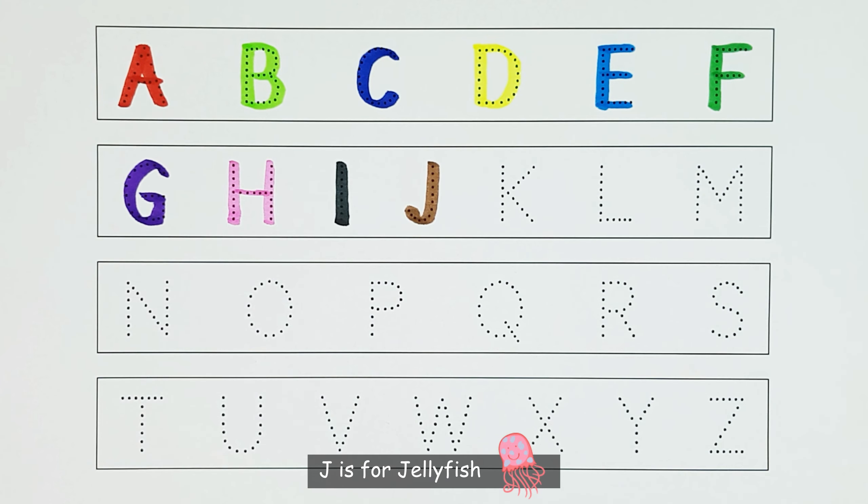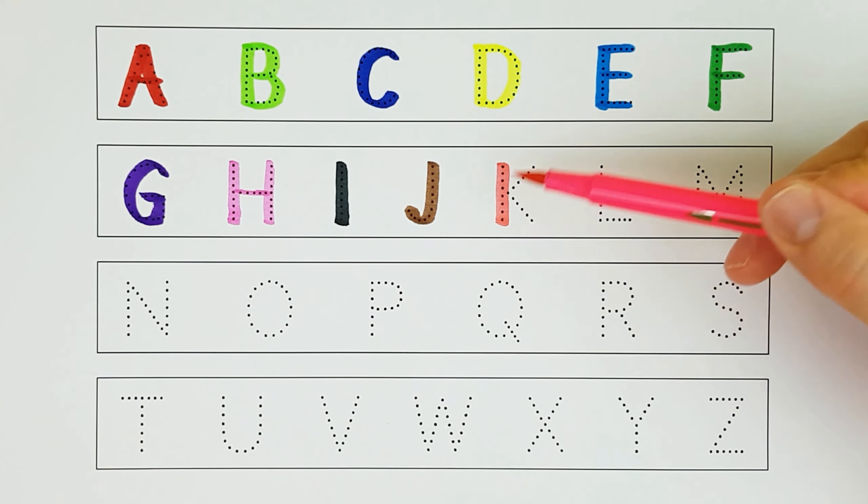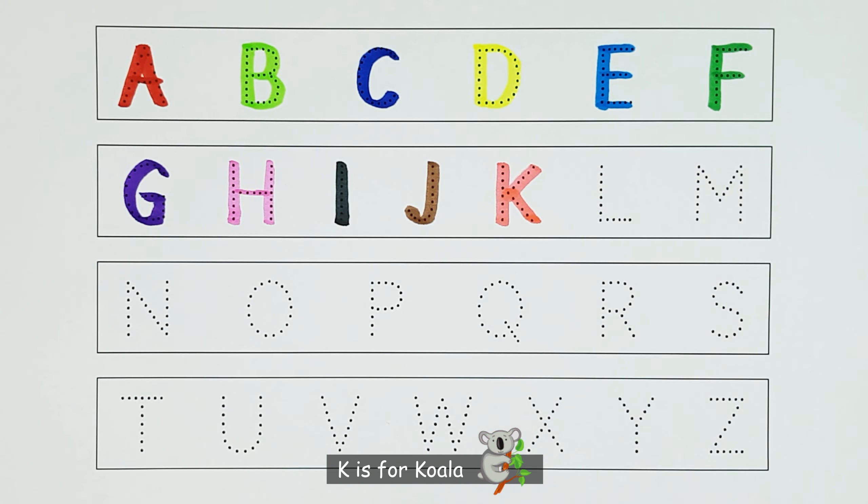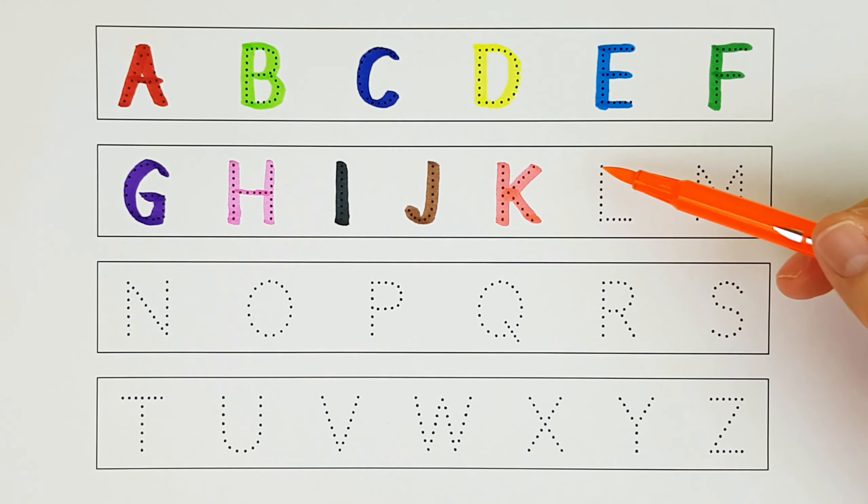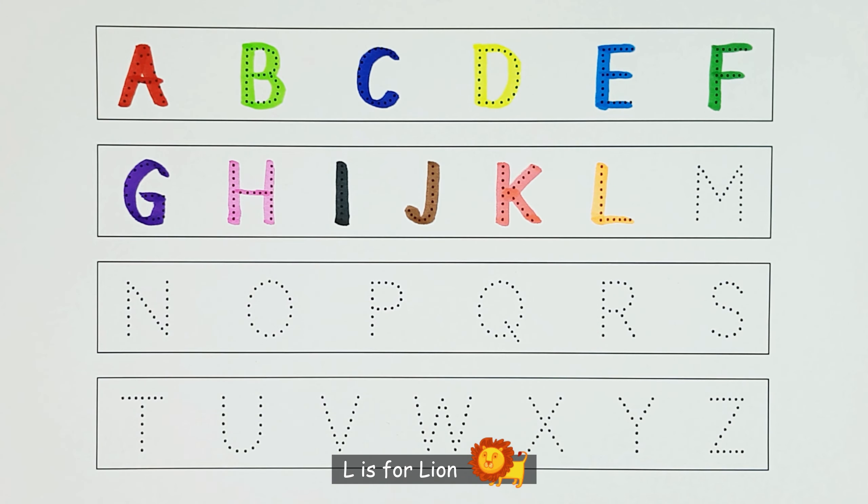J. J. J is for jellyfish. J. K. K is for koala. K. L. L is for lion. L.